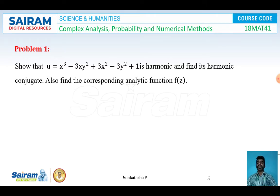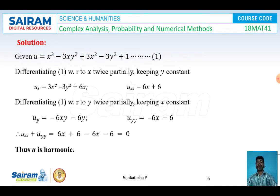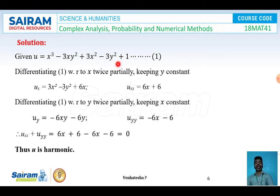We find the partial derivatives u_xx and u_yy. Given u = x³ − 3xy² + 3x² − 3y² + 1 (equation 1), differentiating with respect to x treating y constant: u_x = 3x² − 3y² + 6x. Differentiating again with respect to x: u_xx = 6x + 6.